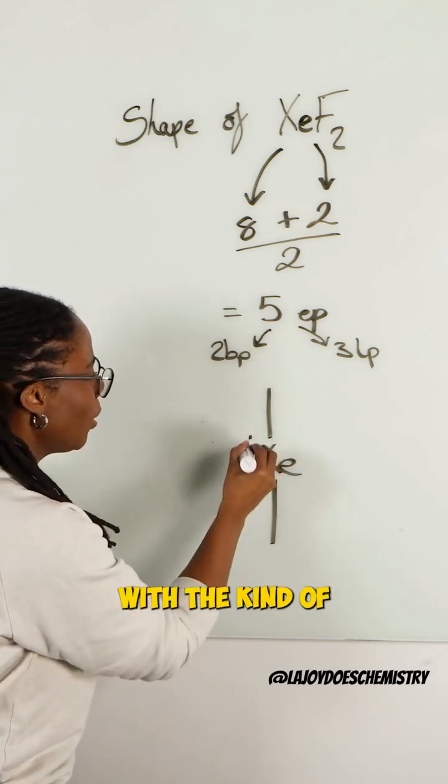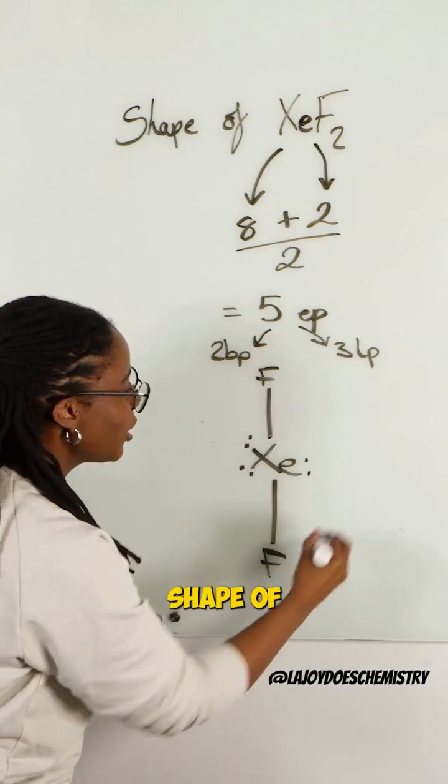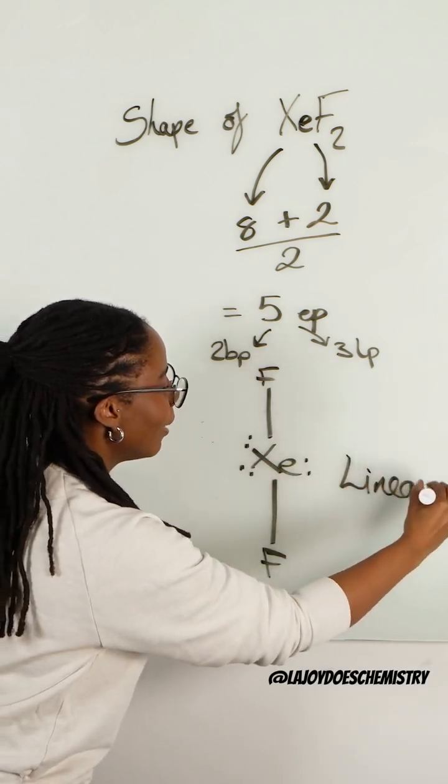And so we end up with the kind of underwhelming shape of linear.